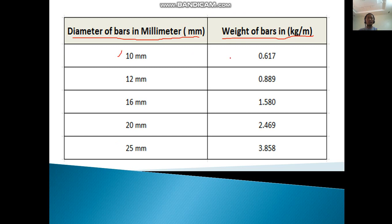For 10mm, it is mentioned here in the table: 0.617 kilogram per meter. And 12mm: 0.889 kilogram per meter. 16mm: 1.580 kilogram per meter. For 20mm: 2.469 kilogram per meter. And 25mm: 3.858 kilogram per meter. This is what's written in the books. So there is a rebar size and there is a weight in kilogram per meter.